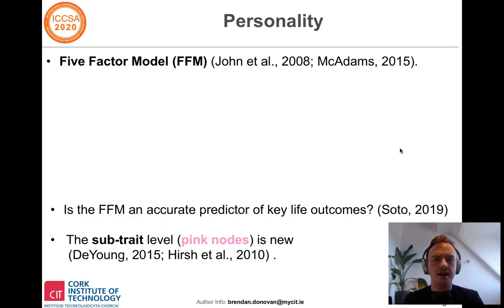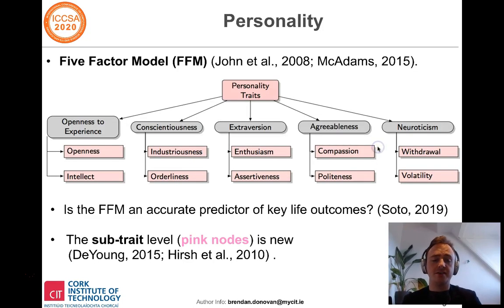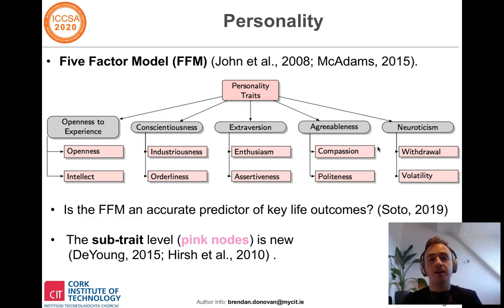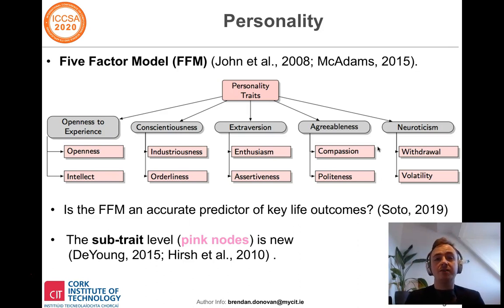In psychology, the predominant model of personality psychology is the five-factor model, which argues that there exist five broad categories of personality traits: openness to experience, conscientiousness, extraversion, agreeableness, and neuroticism. The five-factor model argues that all other relevant sub-traits are subsumed within these five broad factors.